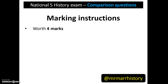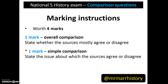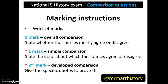Comparison questions are worth four marks. One mark will be given for an overall comparison — this is simply when you state whether, overall, the sources agree or disagree. You can also get one mark for a simple comparison, where you state the issue about which the sources agree or disagree. However, you can also get a second mark for a developed comparison, where, after identifying the specific issue on which the sources agree or disagree, you then give the quotes to support and prove this.